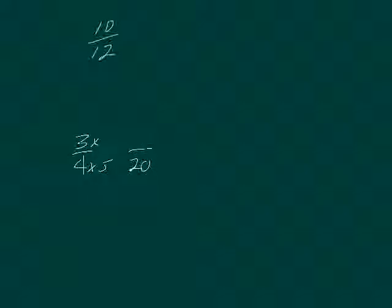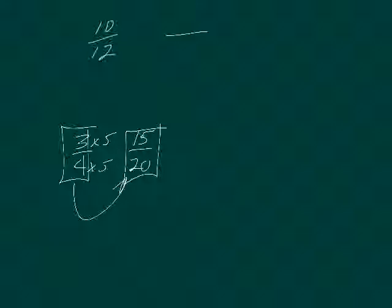So that means I have to multiply the top number by 3x and I get 9x. So 9x over 12x is the same as 3 fourths.